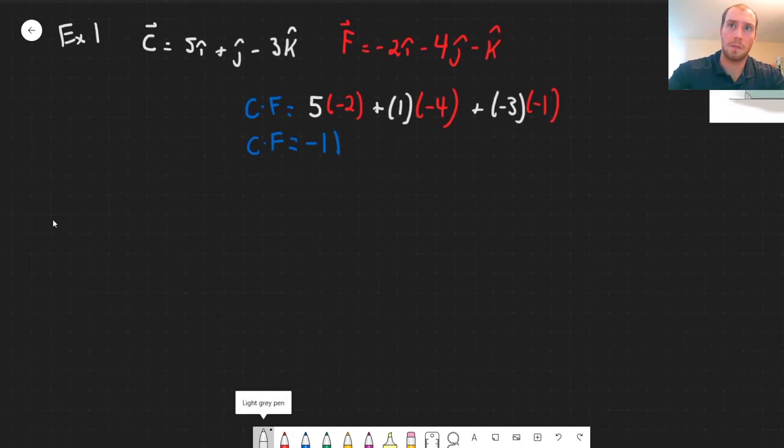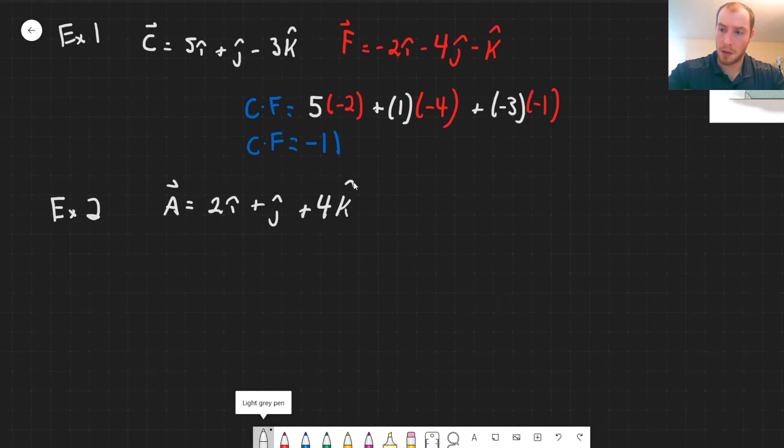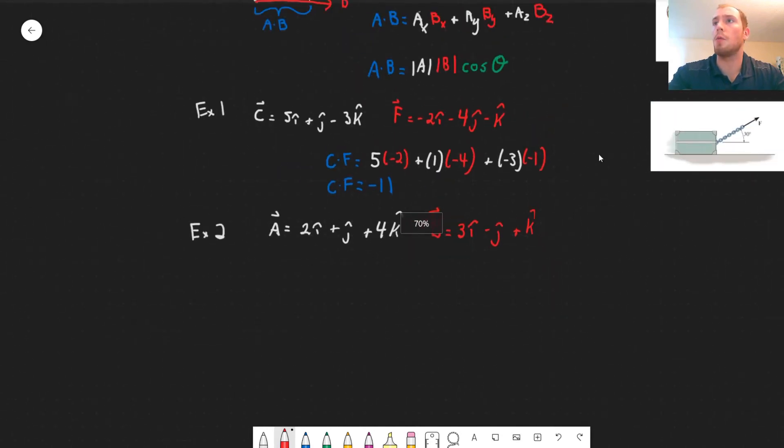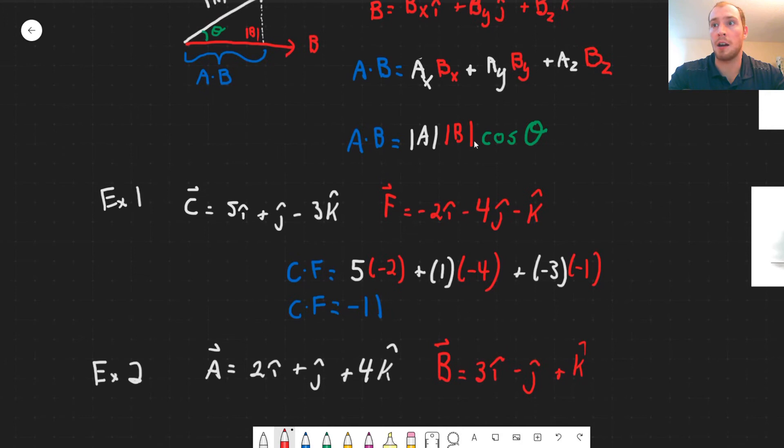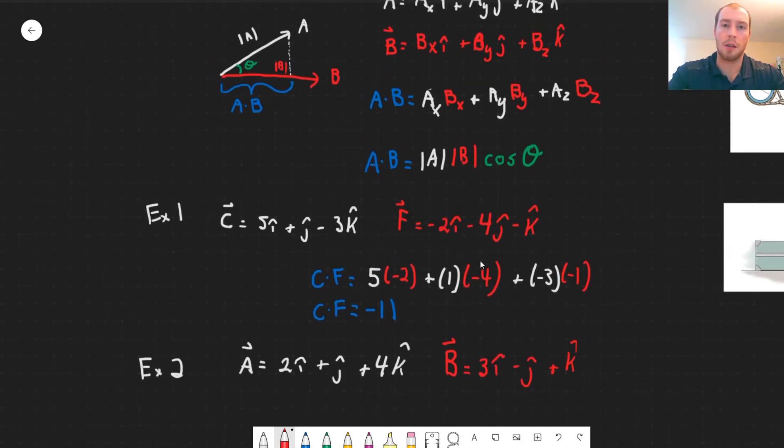So a second example we can get into. We have a vector A is equal to 2i plus j plus 4k. And our second vector B, which is equal to 3i minus j plus k. And we want to determine what the angle between these two vectors are. So we can compute the dot product as we did earlier. And then we can relate this to the angle through our second expression of the dot product. So we can calculate what the magnitudes of A and B are through Pythagorean's theorem, and then we can calculate what the cosine of the angle is from there.